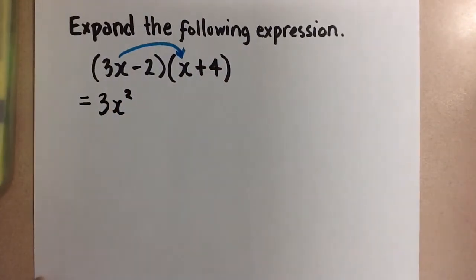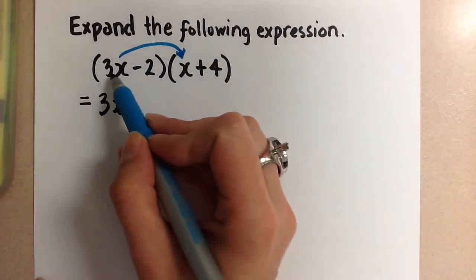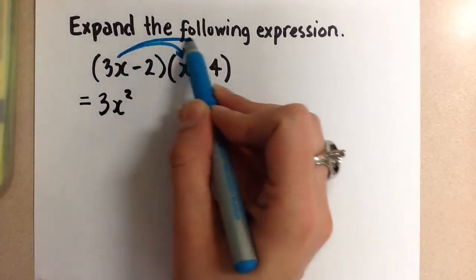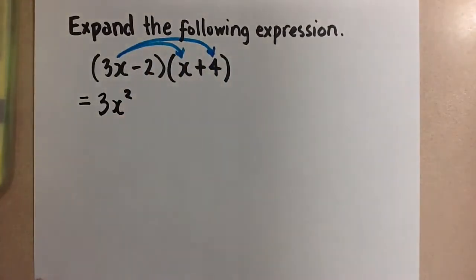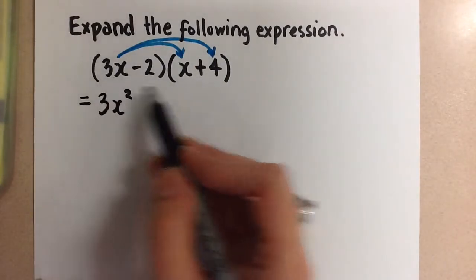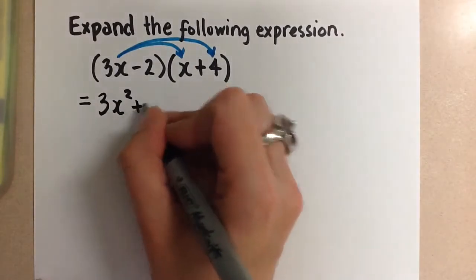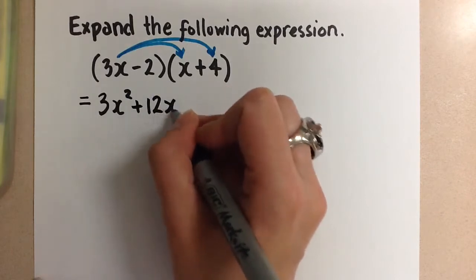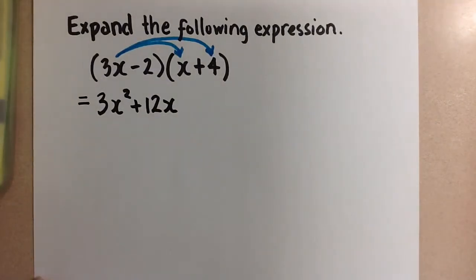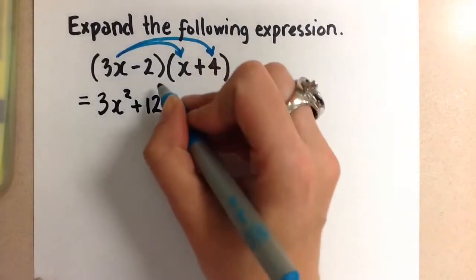Now we're going to multiply the outside terms. So 3x times 4. So we do 3 times 4, which is 12, and then we still have that x. Now we're going to multiply the inside two terms.